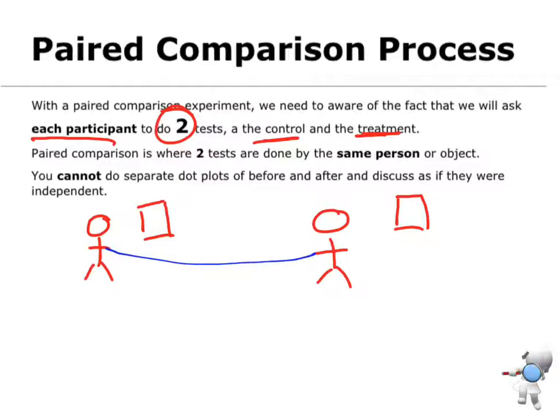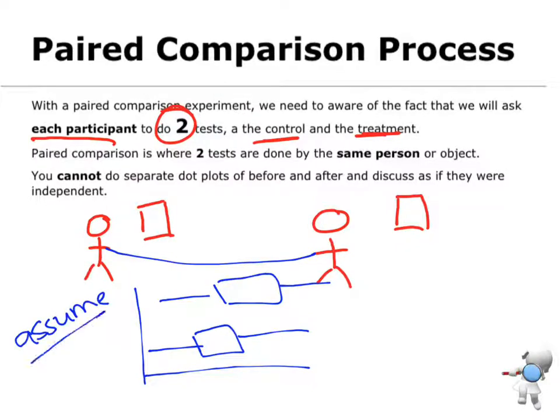Because the student is the same student, I'm going to be comparing their two test results. So it means I can't do a dot plot where I compare the before tests with the after tests, because when we create that kind of graph, it assumes that the groups are independent.